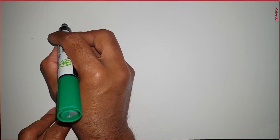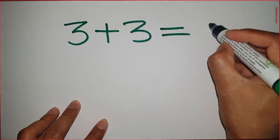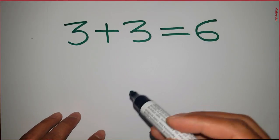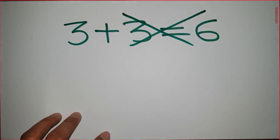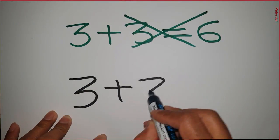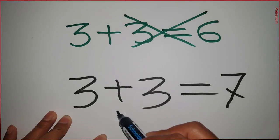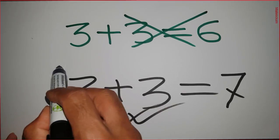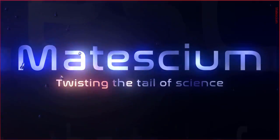Hey, it's me Robie, welcome back. Everyone knows that 3 plus 3 is equal to 6 according to typical mathematics. But would you believe me if I prove that 3 plus 3 is not equal to 6? I am going to prove 3 plus 3 is equal to 7 by breaking the rules of mathematics. It seems like crazy thinking, right? Well, let's see.